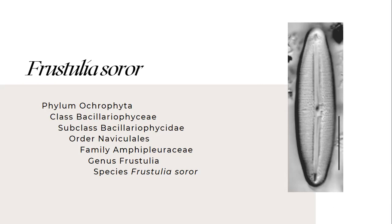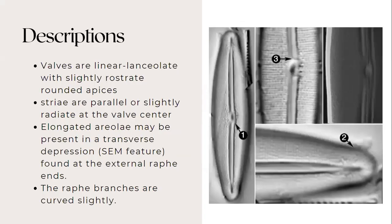Fragilaria. For its description, valves are linear lanceolate with slightly constricted rounded apices. Striae are parallel or slightly radiate at the valve center. Elongated areolae may be present in the transverse depression found at the external raphe ends. The raphe branches are curved slightly.